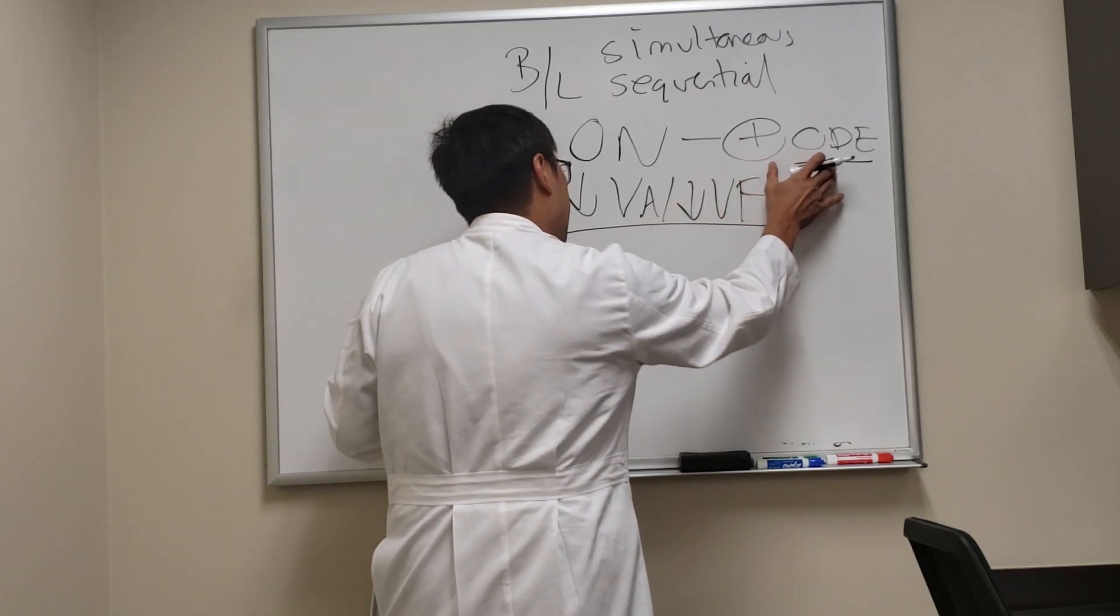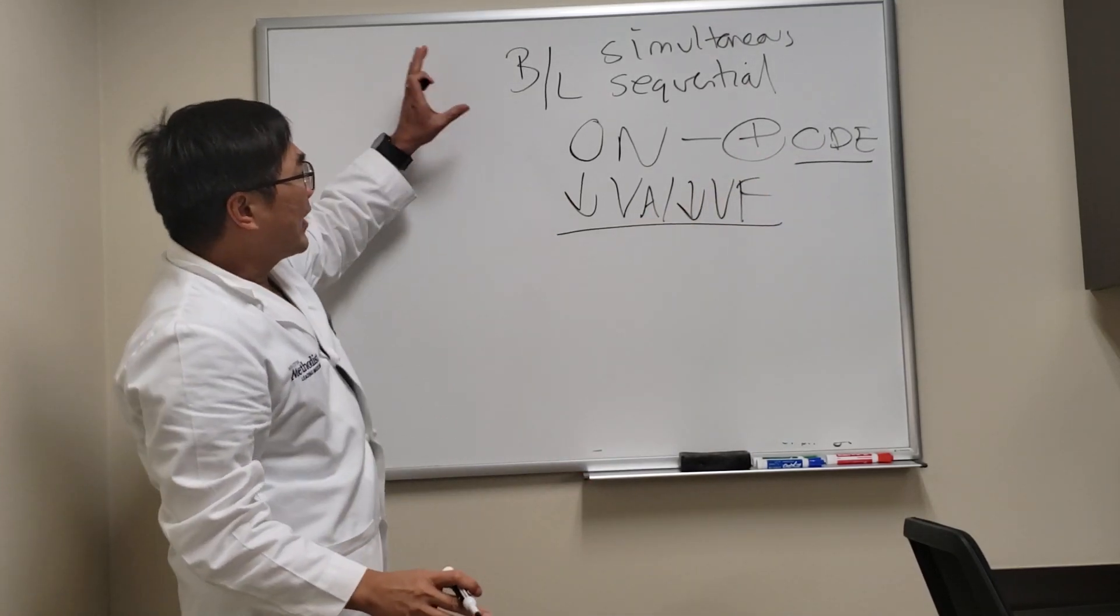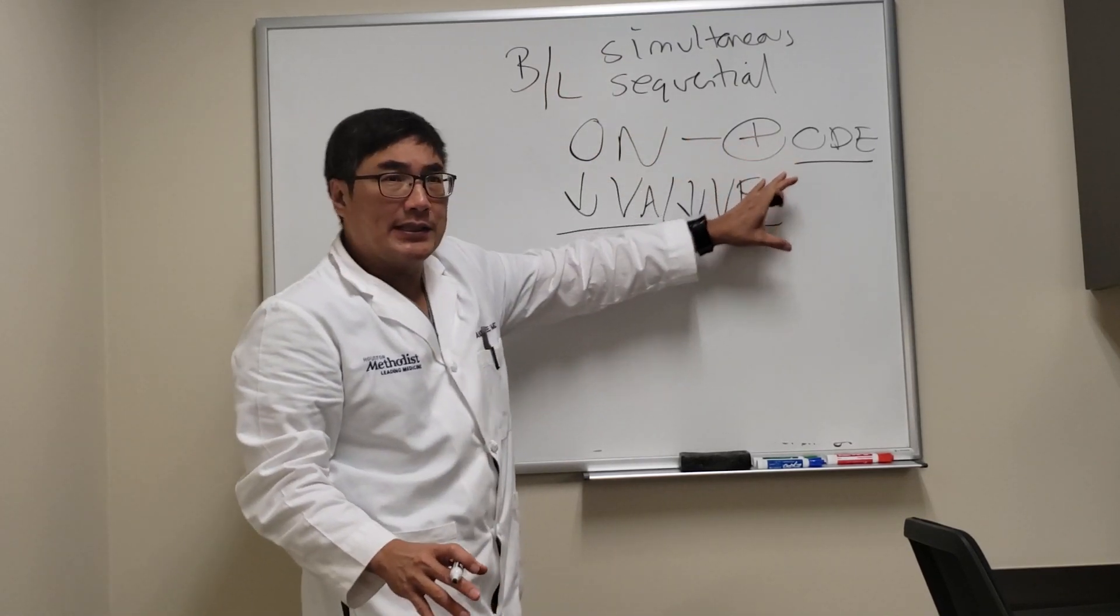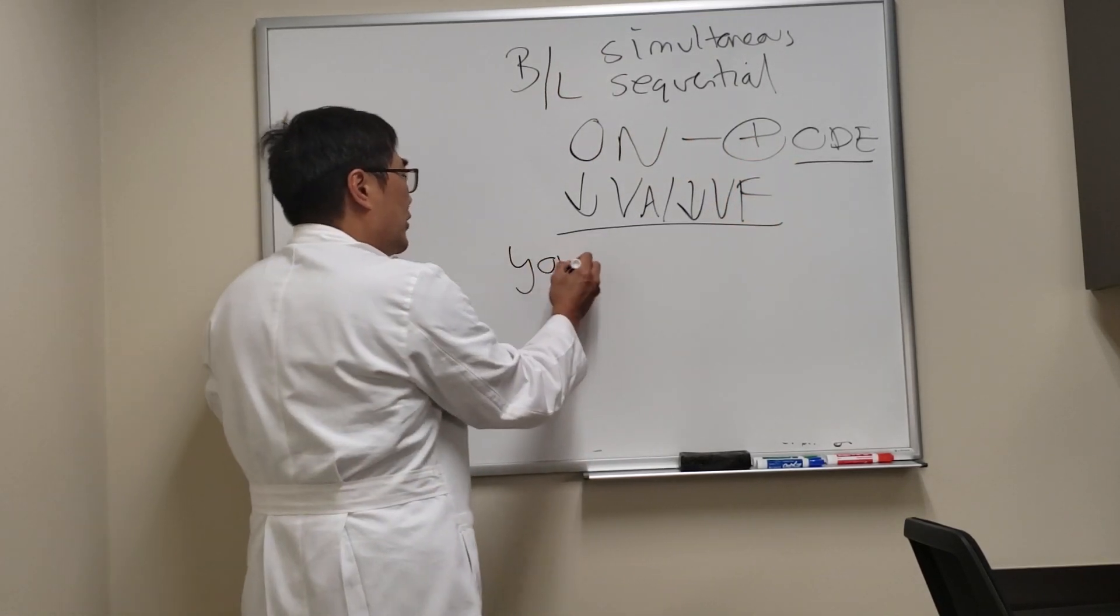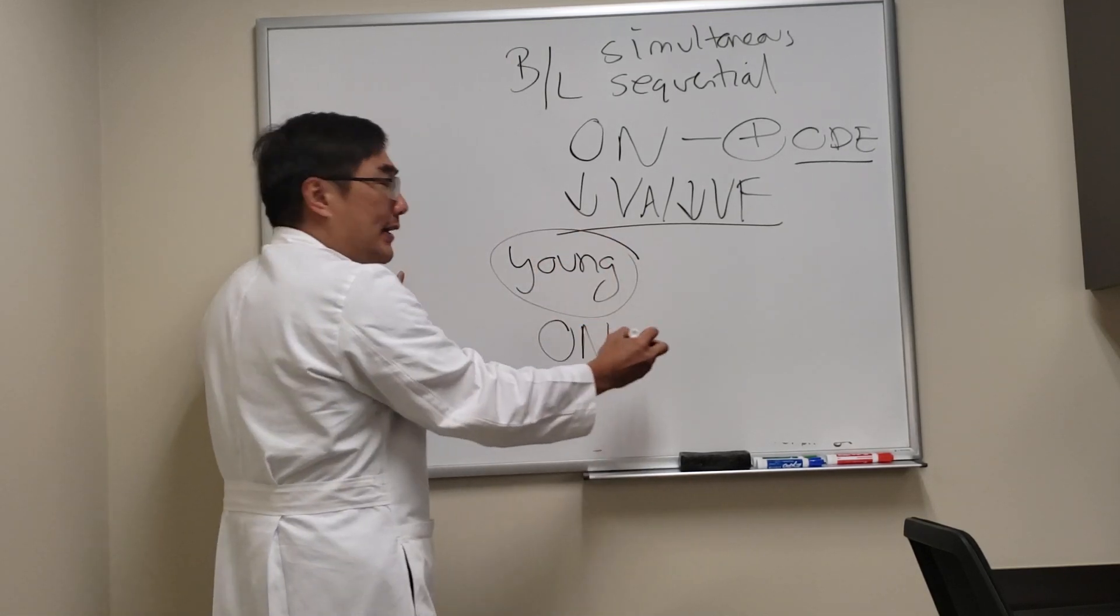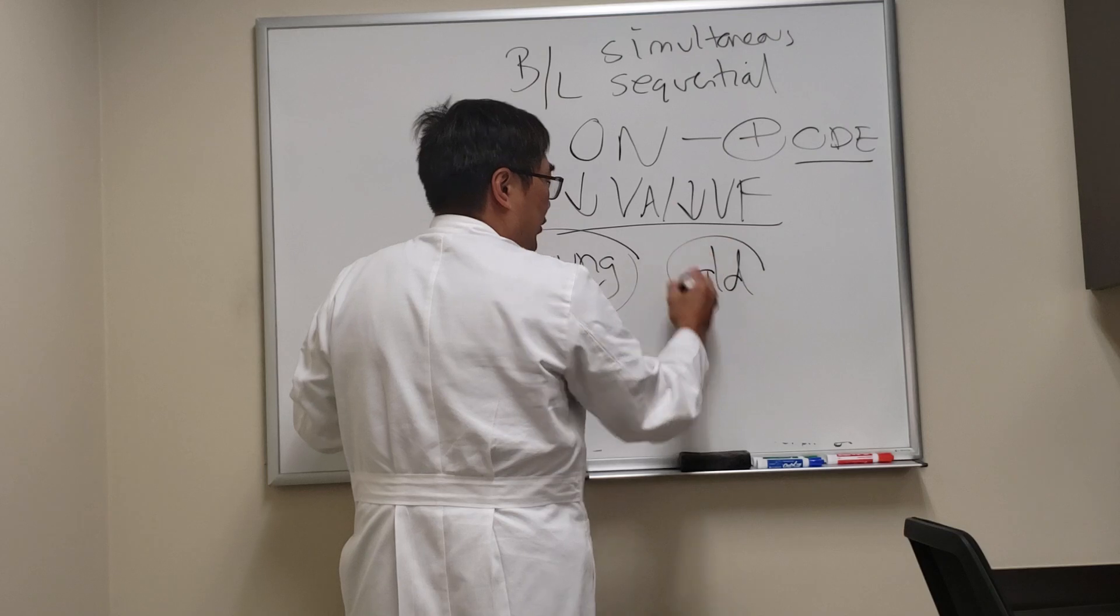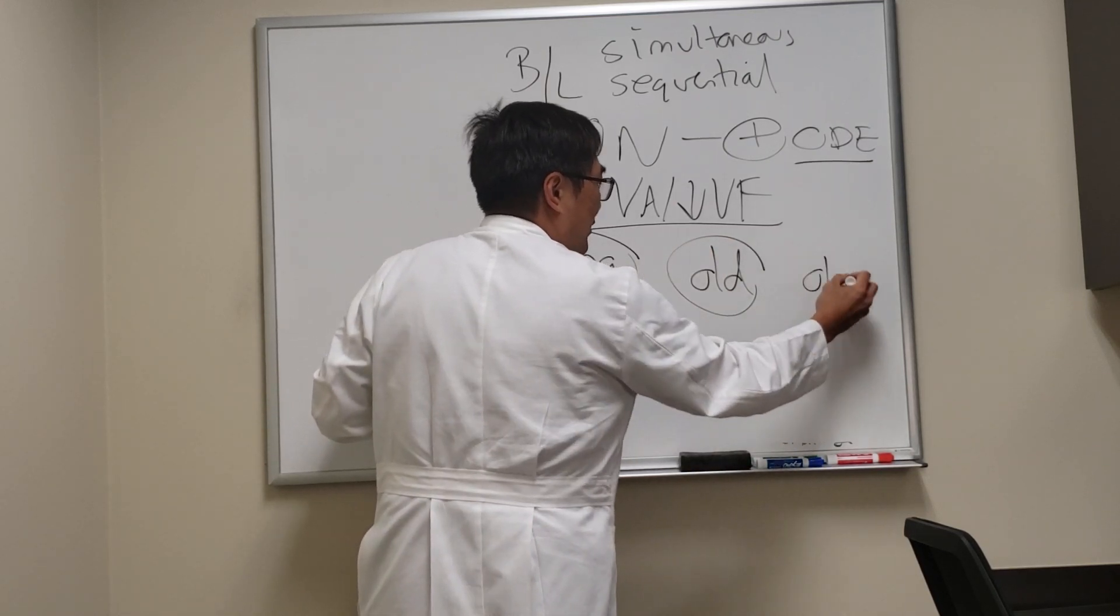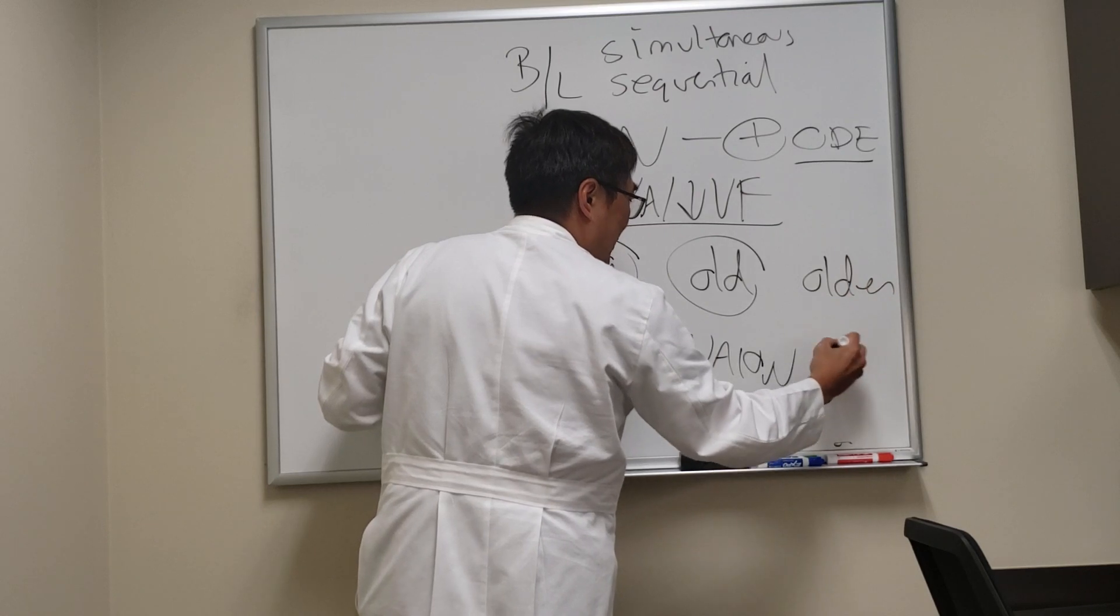The thing that's interesting is when they have disc edema. When we have bilateral simultaneous and rapidly progressive disc edema in a young person, normally for optic neuropathy we're thinking about optic neuritis. In an older person you're thinking about NAION, and in a much older person you'd be thinking about giant cell arteritis.